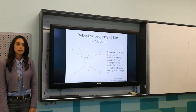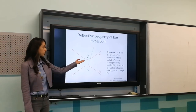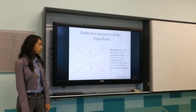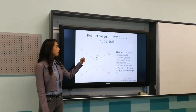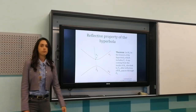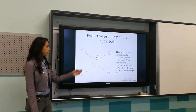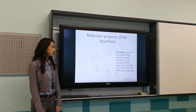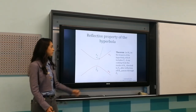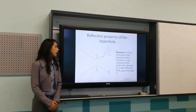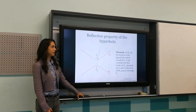The hyperbola also has its own reflective property, which states that a ray coming from one focus F2, after reflection from branch H1, passes through the other focus F1. We proved this theorem by using the fact that when the ray reflects from the branch, it actually reflects off the tangent line that passes through the point of reflection. Now Martin will tell you more about the reflective properties.